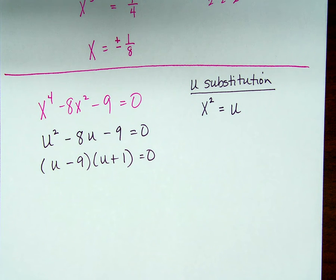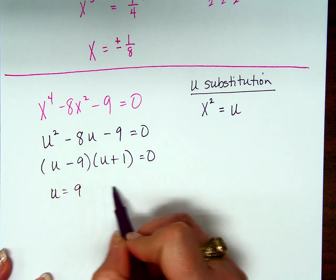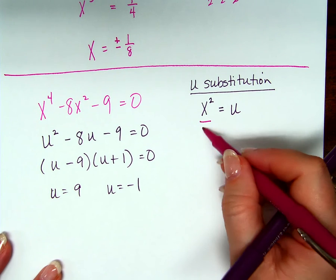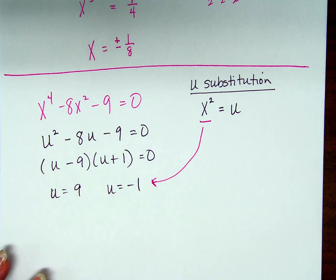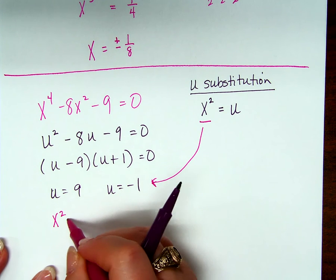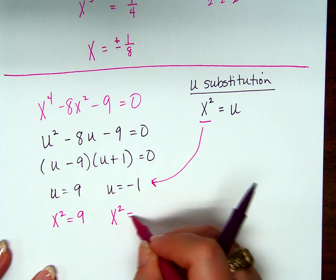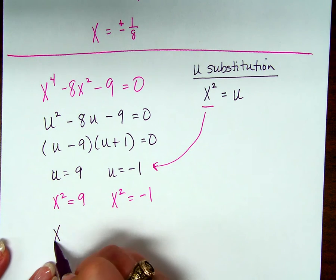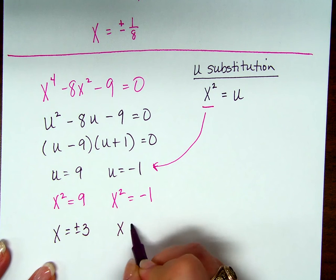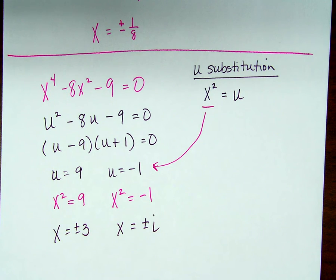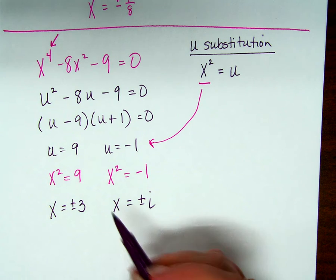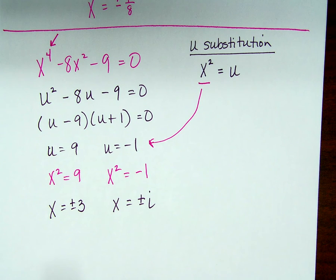So, u is going to equal 9 and u is going to equal negative 1. Well, what does u actually equal again? x squared. So now that we know what u is, we need to unsubstitute it. So this is really x squared equals 9, and x squared equals negative 1. Yeah, now I solve for x, right? Square root of both sides, x equals plus or minus 3, and x equals plus or minus i. How many solutions should I have gotten? Four. How many did I get? Four. Plus or minus 3, plus or minus i. That's called a u-substitution.